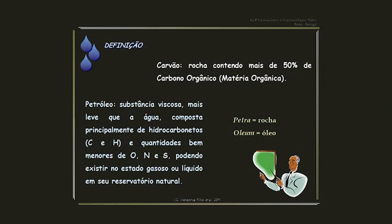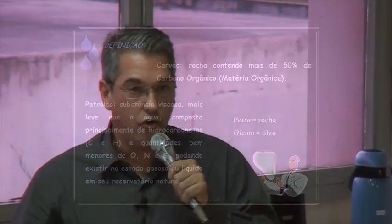Carvão é uma rocha contendo mais de 50% de carbono orgânico. E petróleo, para nós, é uma substância viscosa, mais leve que a água, composta principalmente por hidrocarbonetos — carbono e hidrogênio — além de outros elementos como nitrogênio, enxofre, oxigênio, e outros componentes como metais, compostos que chamamos de organometálicos.